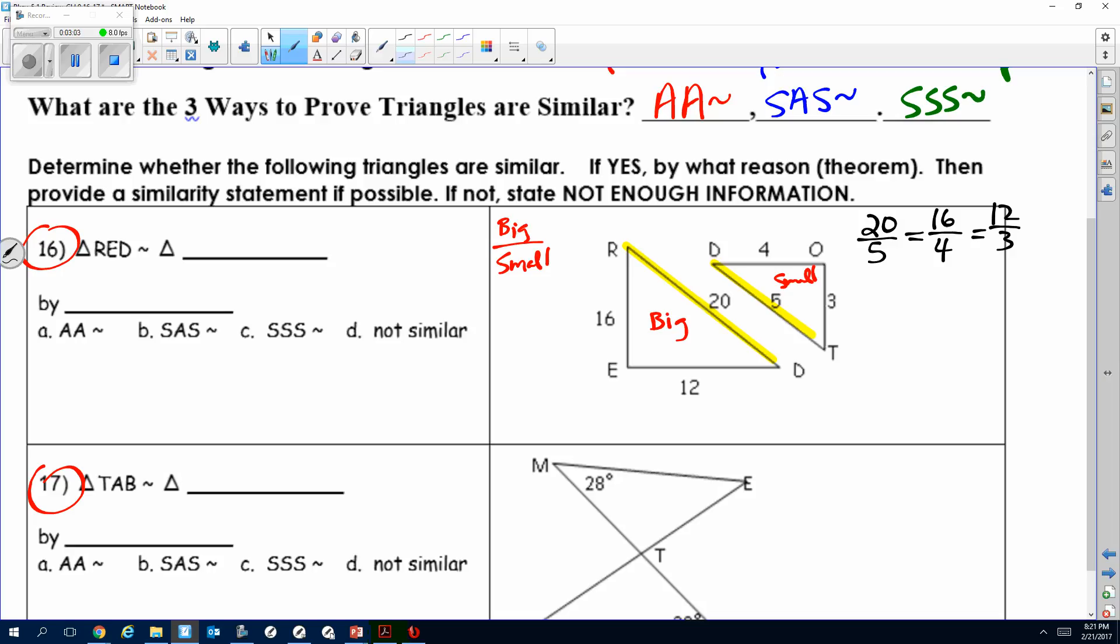You keep the same comparison: big to small, biggest to smallest, medium, smallest. If I look at these, 20 over 5 reduces to 4, 16 divided by 4 is 4, 12 divided by 4 is 4. Since they all are equal, then this is yes because they are proportional.